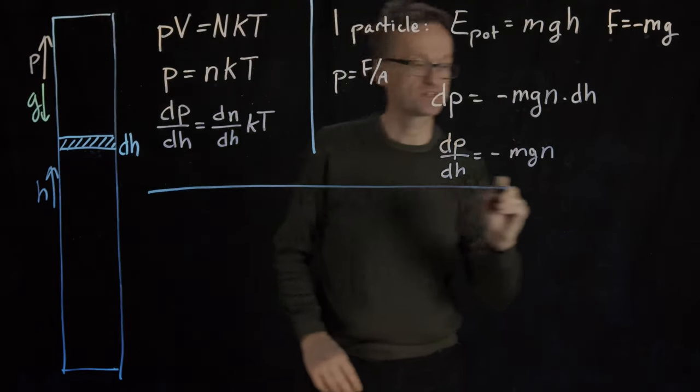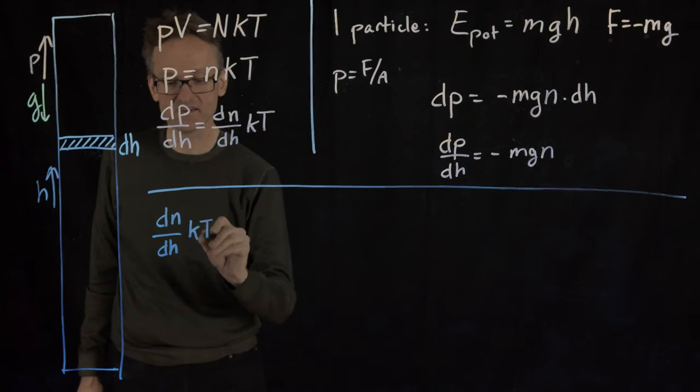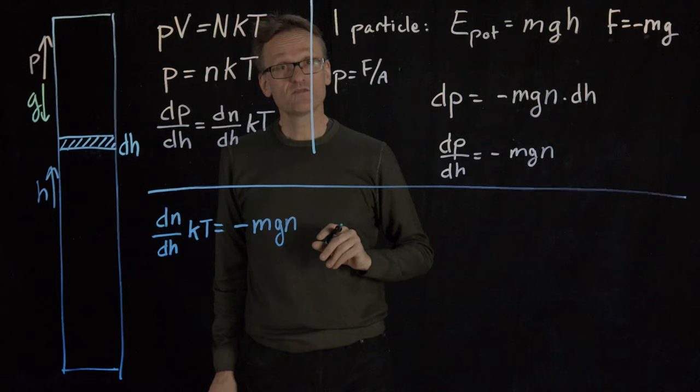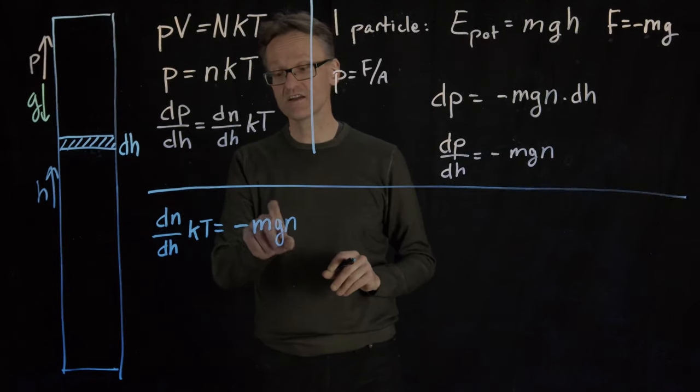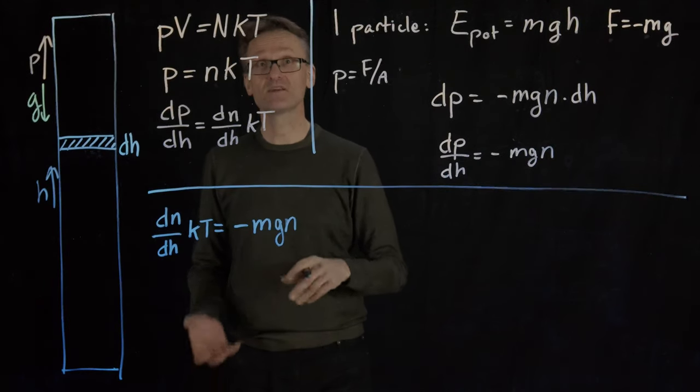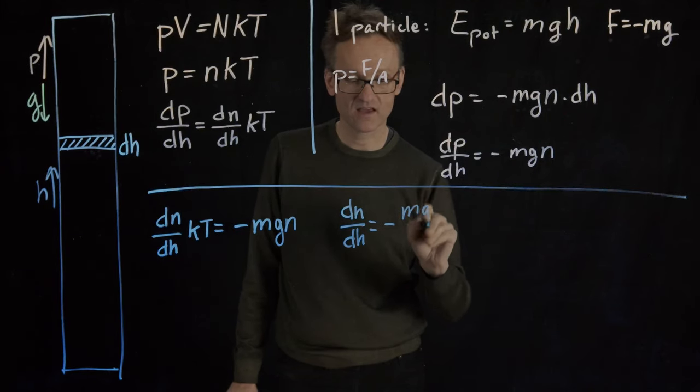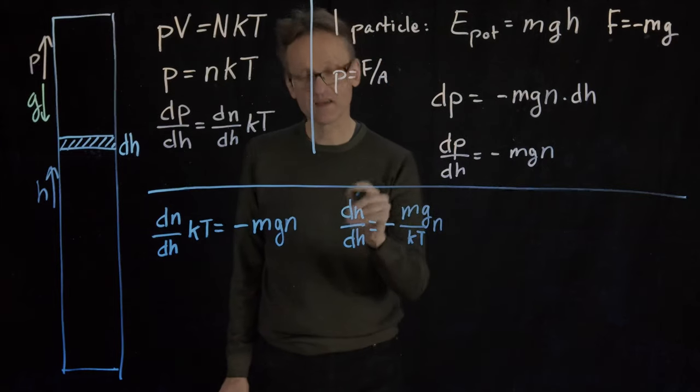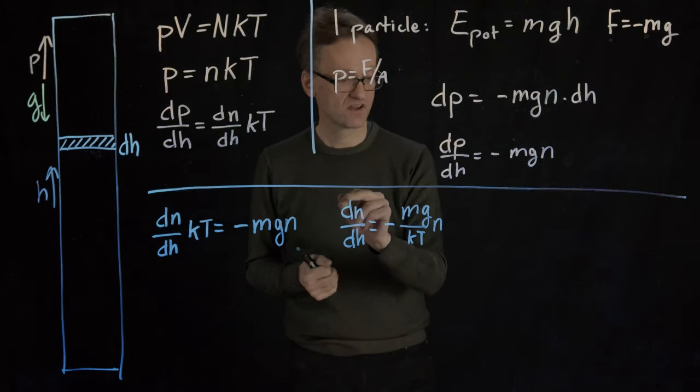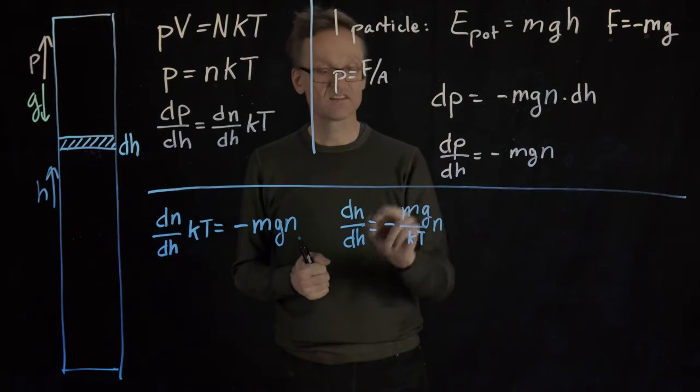But now I have two expressions for dp/dh here and here. So let's put them in the same equation. That says that dn/dh multiplied by KT equals minus mgn. This is a differential equation. There are lots of constants here but n is a function of h, and here are some constants, and then we have the derivative of that function. I actually find this remarkably easy to solve just by writing it in a different way. Divide both sides by KT. So then I have that dn/dh equals minus mgn divided by KT. And again n is a function. So what I'm saying here is I have a function that has the property that the derivative of the function is proportional to the original function and then we have a constant that shows up in front of it.